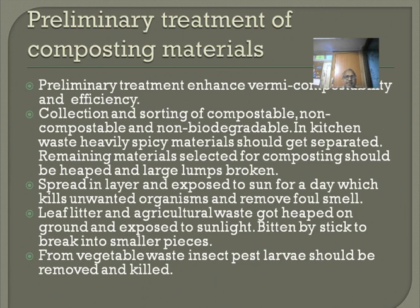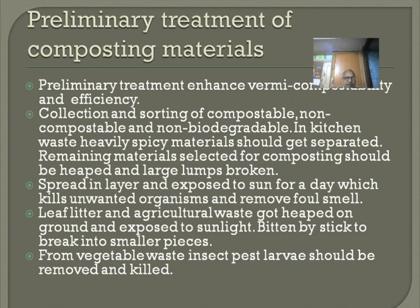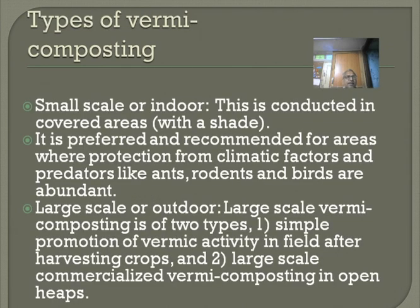Preliminary treatment enhances vermicompostability and efficiency. This involves collection and sorting of compostable, non-compostable, and non-biodegradable materials. In kitchen waste, heavily spicy materials should be separated. Remaining materials selected for composting should be heaped, large lumps broken, then sprayed in layers and exposed to sun for a day, which kills unwanted organisms and removes foul smell. Leaf litter and agricultural waste are heaped on the ground, exposed to sunlight, and beaten with a stick to break into smaller pieces. From vegetable waste, insect larvae should be removed and killed.